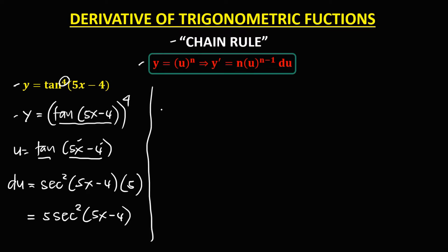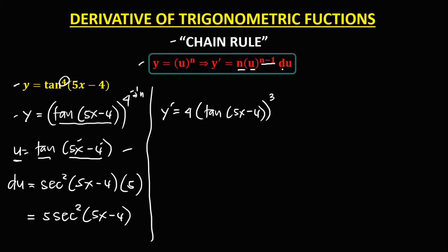To find the derivative, y prime from the chain rule formula: we have n, and n is the exponent, that's 4, times u, and u is tangent (5x minus 4). So we have tangent (5x minus 4) to the power n minus 1, so 4 minus 1, that's 3. Then times du, the derivative of u, that's 5, times secant squared (5x minus 4).